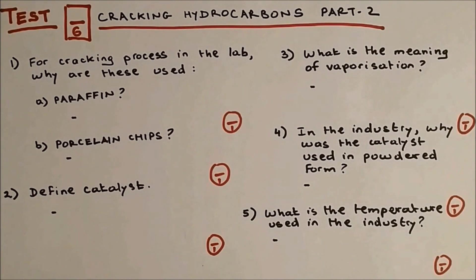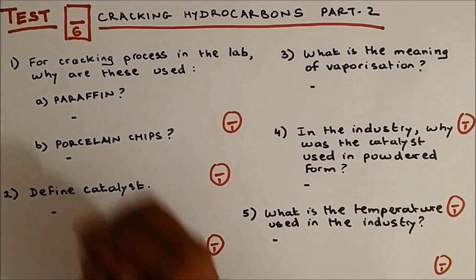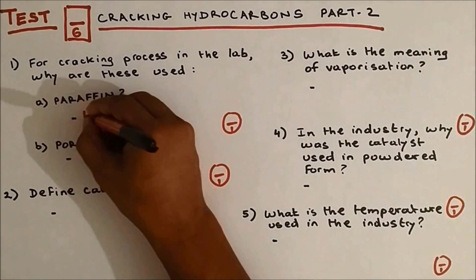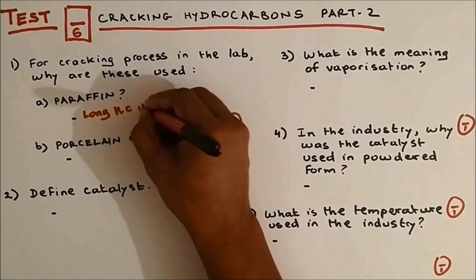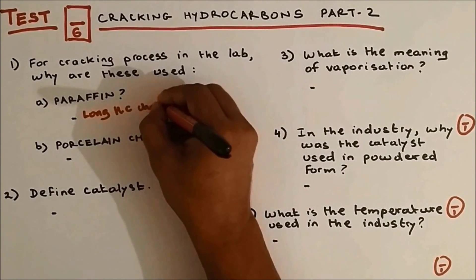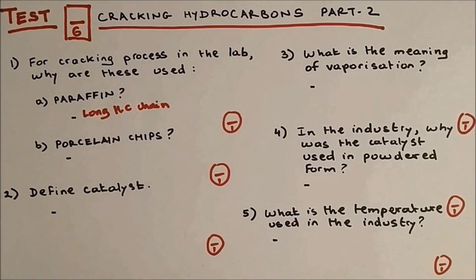For the cracking process in the lab, why is paraffin used? The paraffin acts as a long hydrocarbon chain. Paraffin is the long hydrocarbon chain which will be broken down into smaller alkanes and alkenes.